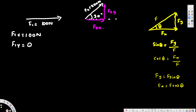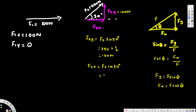Applying this to F2: F2y = F2·sin(30°) = 200 × 0.5 = 100 newtons. And F2x = F2·cos(30°) = 200 × cos(30°) = 173.2 newtons. So those are the x and y components of the second vector.